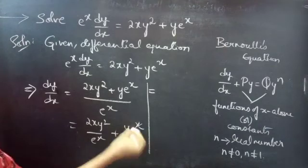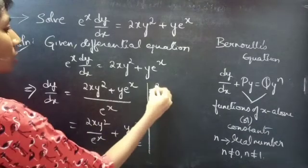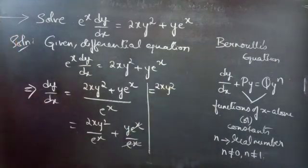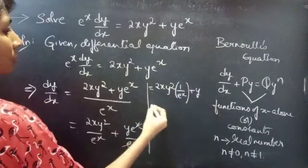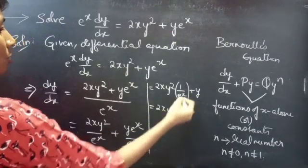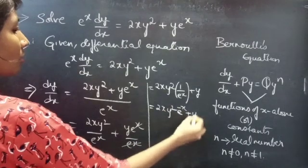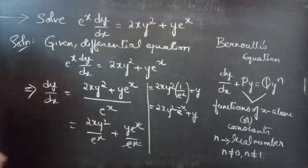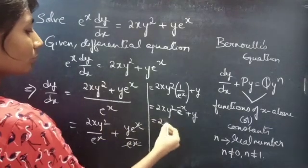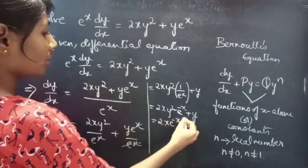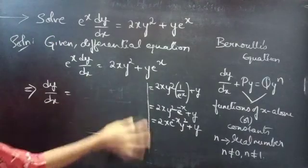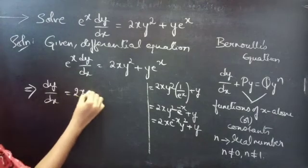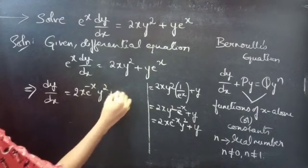Here e^x gets cancelled, and you can write the first term as 2xy² times 1/e^x, which by the reciprocal law equals 2xy²·e^{-x} plus y. Arranging functions of x first and then function of y, we have dy/dx equals 2x·e^{-x}·y² plus y.